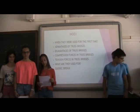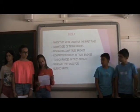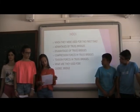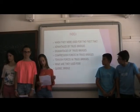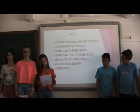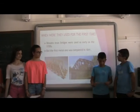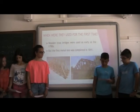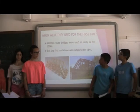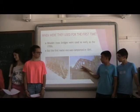In this presentation, we present Truss Bridges. This work contains: when they were used for the first time, advantages and disadvantages of Truss Bridges, compression forces and tension forces, what they are used for, and the Cleddau Bridge. Wooden Truss Bridges were assembled in the 18th century, but the first metal one was built in 1841. In the pictures you can see a wooden Truss Bridge and a metal Truss Bridge.